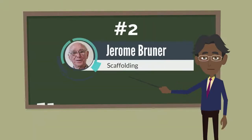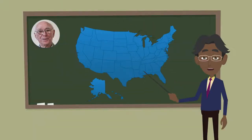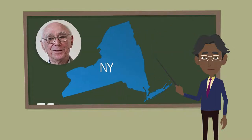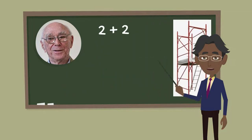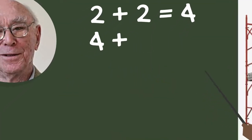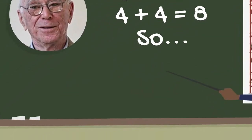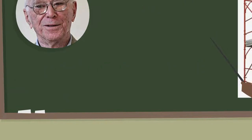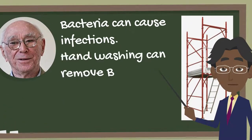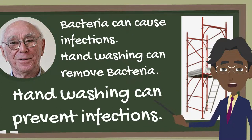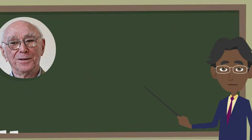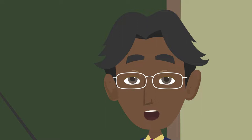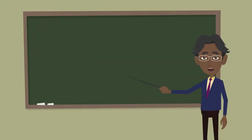Number two: Jerome Bruner. Jerome Bruner was born in New York, New York in 1915. He was the author of the learning theory known as scaffolding. Scaffolding is breaking up the learning into chunks and providing a tool or structure with each chunk. When scaffolding reading, for example, you might preview the text and discuss key vocabulary, or chunk the text and then read and discuss as you go.